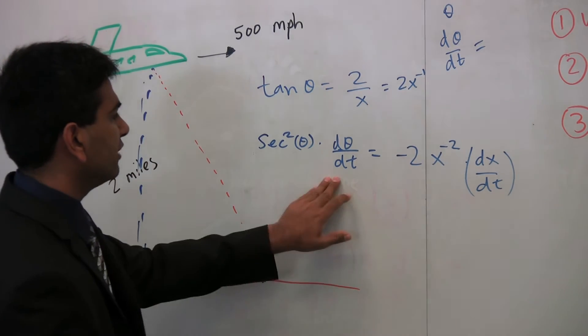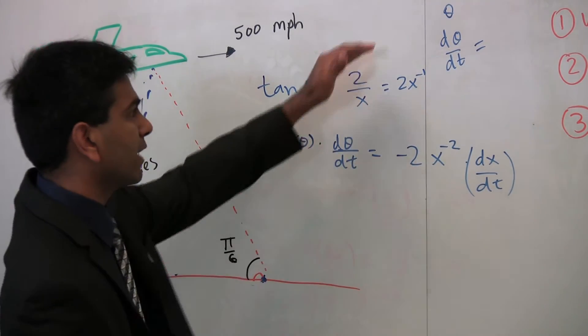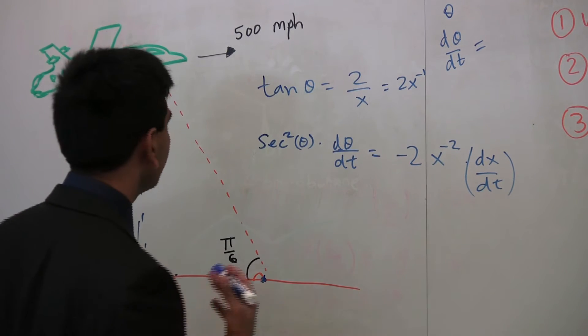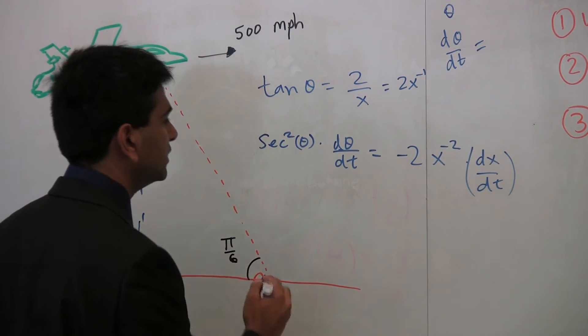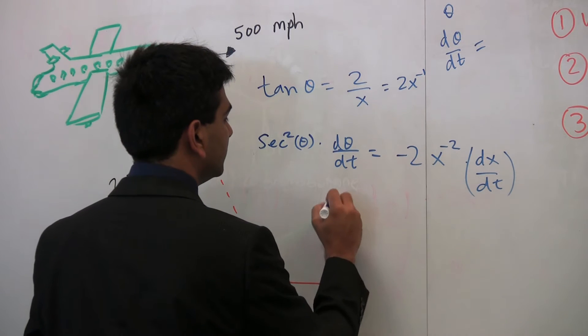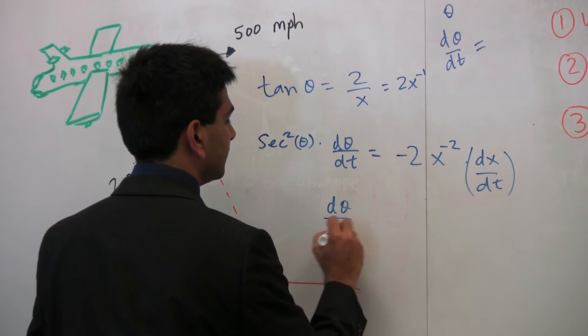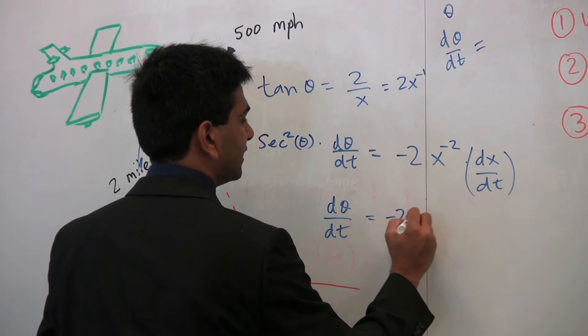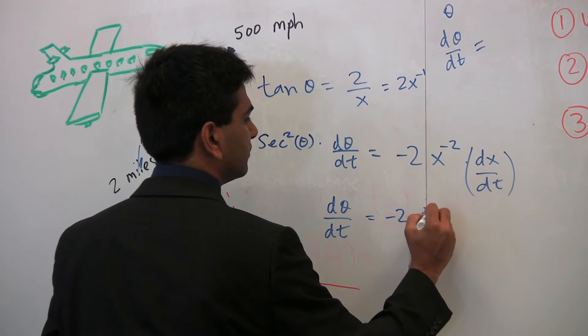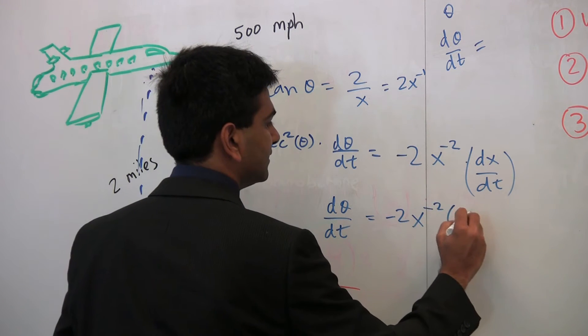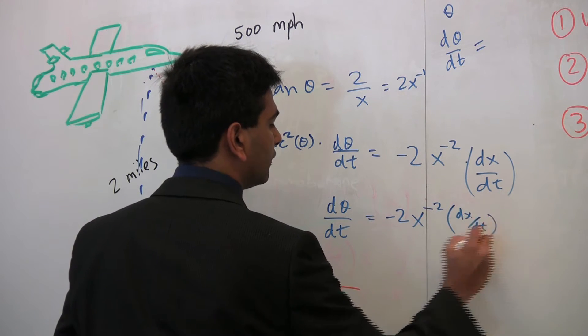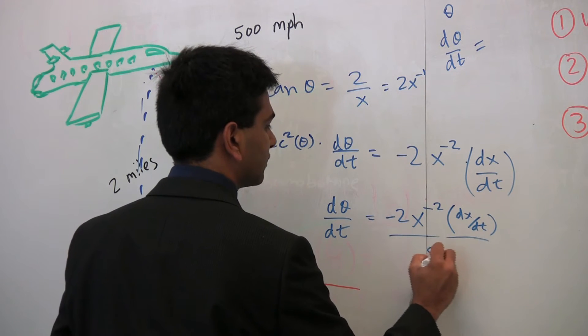Now, to solve for dθ/dt, which is what we want to do, that's what the question is asking us, how fast do you have to change the camera's angle, we're just going to divide by secant squared. So, dθ/dt is equal to negative 2x to the negative 2 times dx/dt over secant squared of theta.